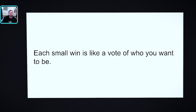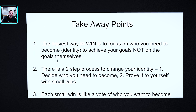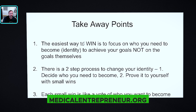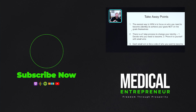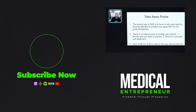The easiest way to win on anything — whether it's physical, business, or whatever — is not to focus on what you want or the outcome, but instead to focus on who you need to become in order to get that outcome. That's your identity. The two-step process: decide who you need to become to reach your goal, then prove it to yourself with small wins that add up and reinforce your identity. And number three: each small win is like a vote of who you want to become.